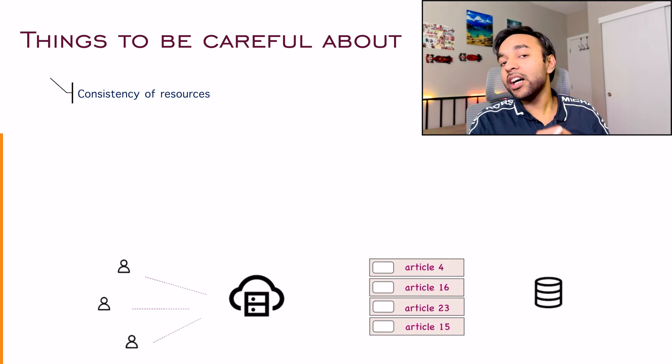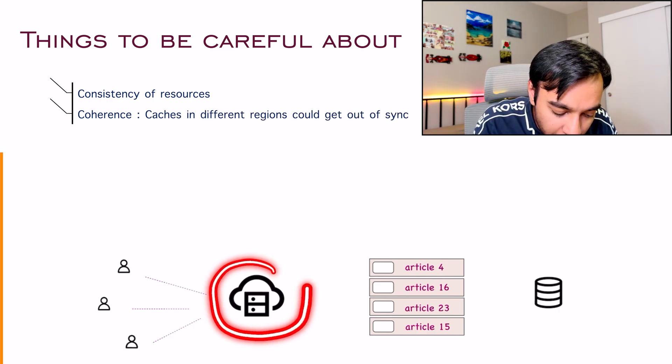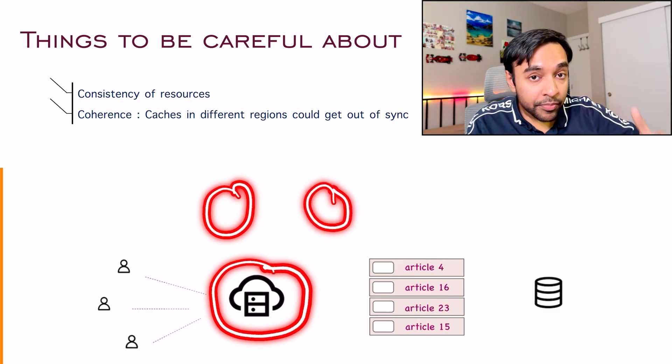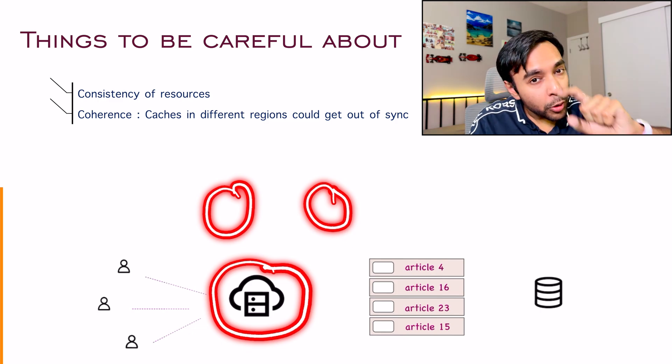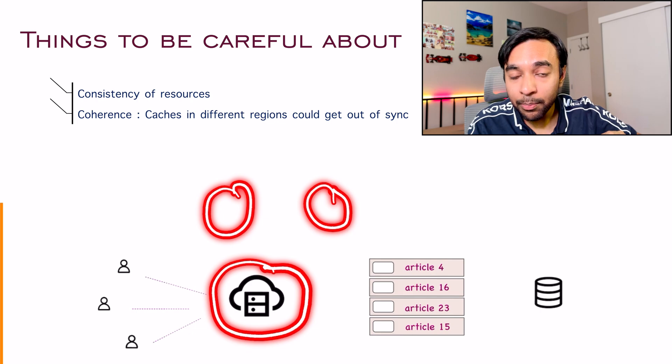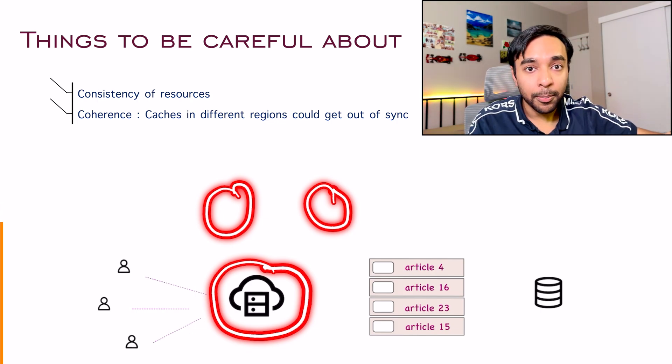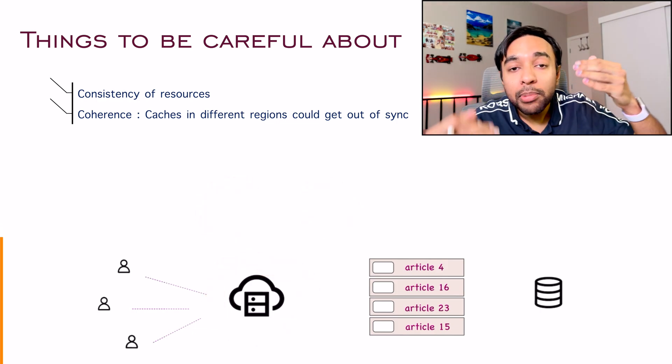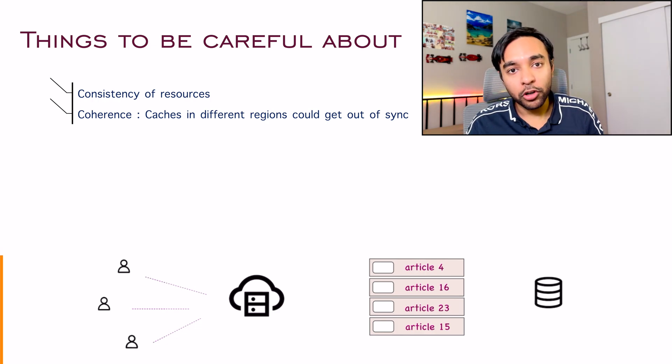Similar to this, the other issue you would face with caching is coherence. It means that, let us say your server is deployed at multiple places in the world. Then each of these servers will have a different cache. So you have to decide, should all of your caches be exactly the same or should all of your caches be according to the users who are accessing them? And this can become a challenge when you are actually implementing all of this in your application code. So this is one more thing to be careful about.